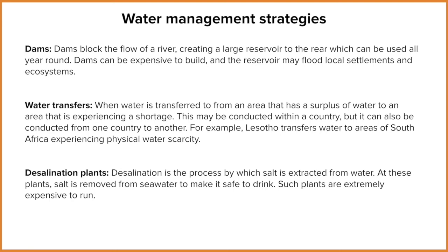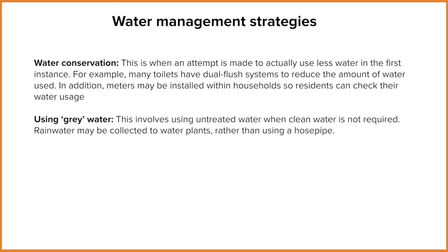Now let's have a look at the soft strategies — we've only got two to consider. The main one is water conservation: the idea that we try to use less water so that we can meet our needs with the current supply we've got. There are a couple of strategies, and a lot of these are done in the home, so they are like bottom-up strategies.